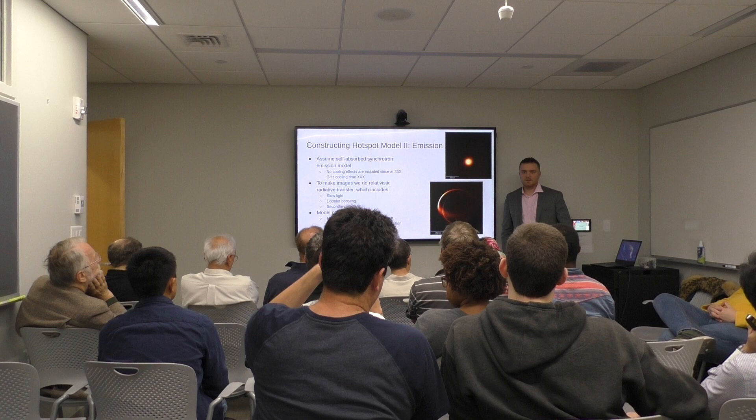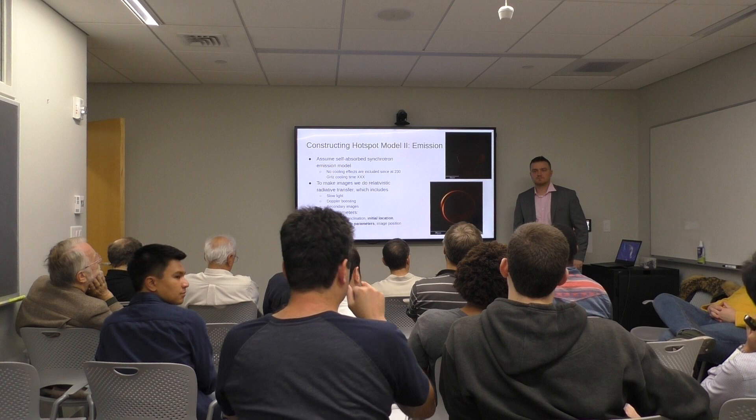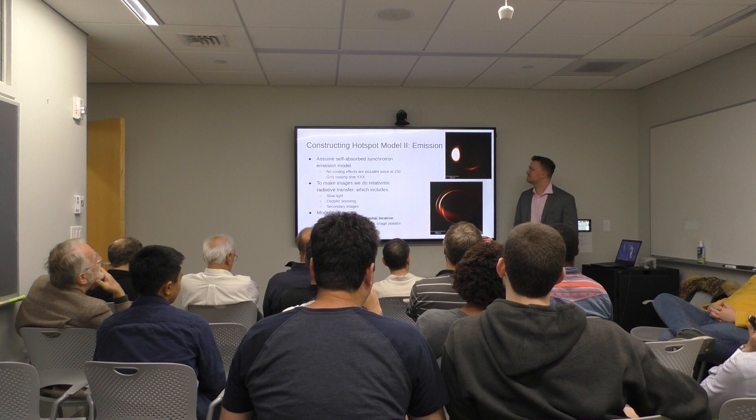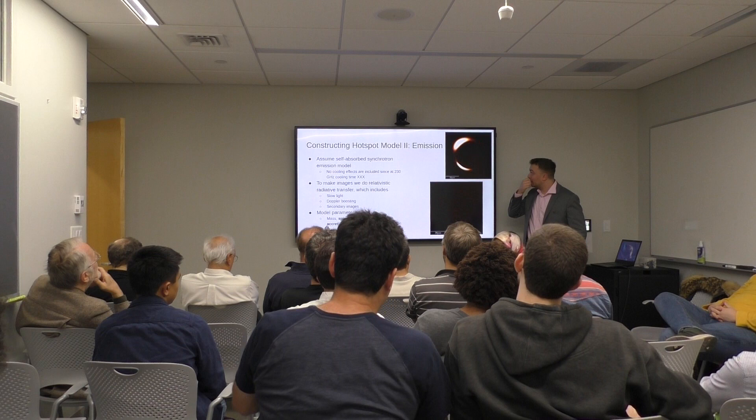Back to the EHT extraction: we used EHT-IM software developed at BHI, largely by former member Andrew Child. We assumed a 12-frame movie, broke the observation into those frames, created synthetic data including important effects like Earth rotation causing baseline movement, and a semi-reasonable noise budget. We then performed Bayesian analysis, fitting all spot parameters except mass, inclination, and position angle — which we assume are known from fitting average non-flaring data.